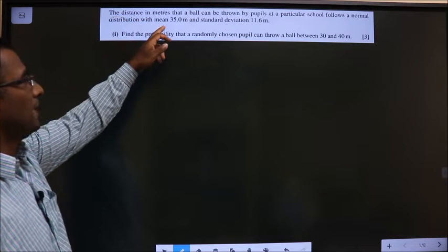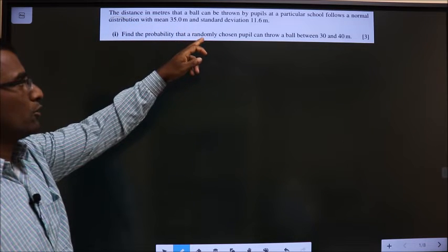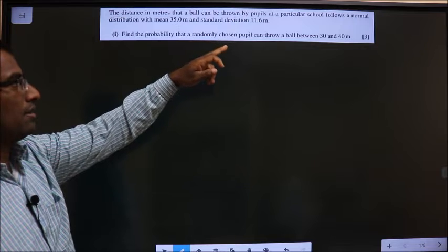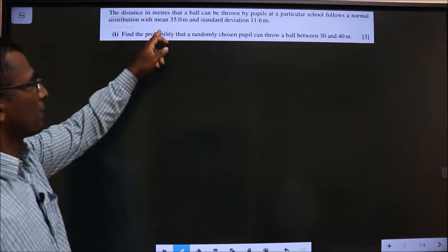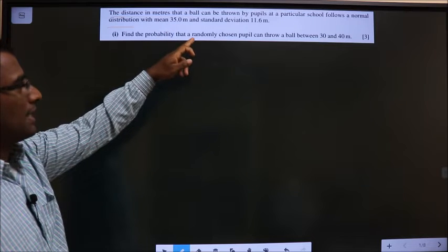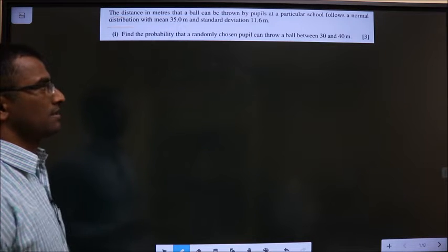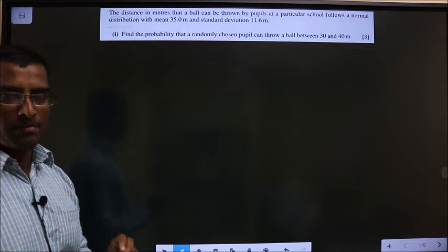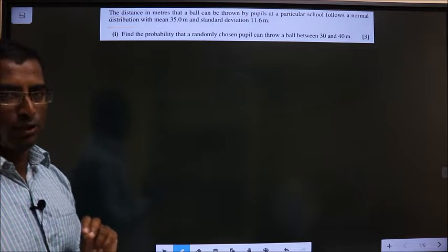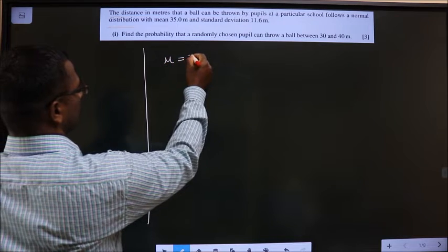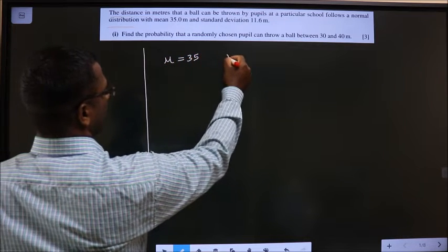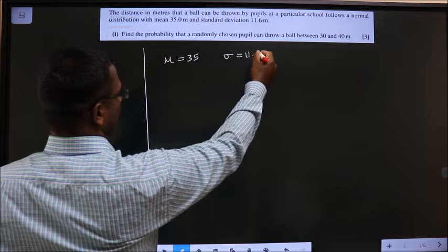The distance in meters that a ball can be thrown by pupils at a particular school follows a normal distribution with mean 35 and standard deviation 11.6. You have come across information, make a note. So mean is 35, standard deviation is 11.6.